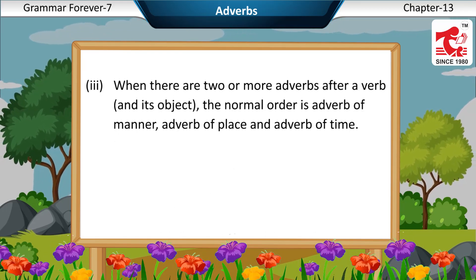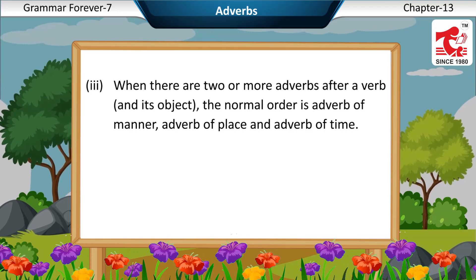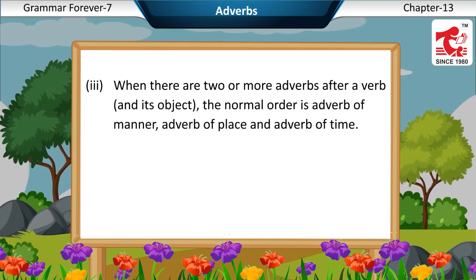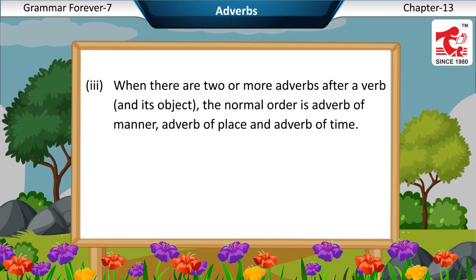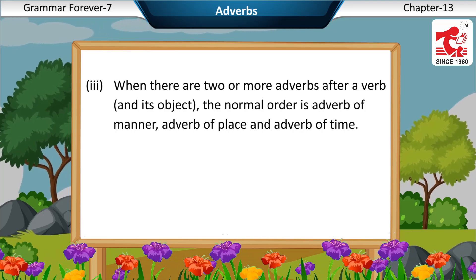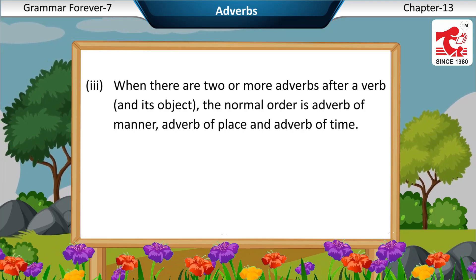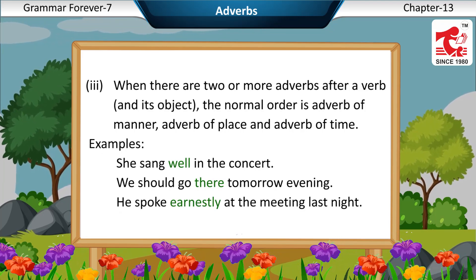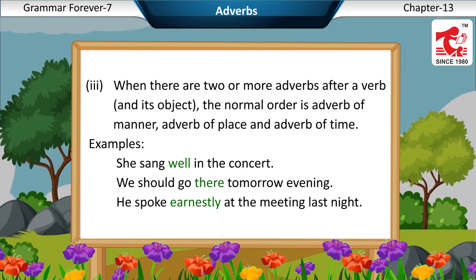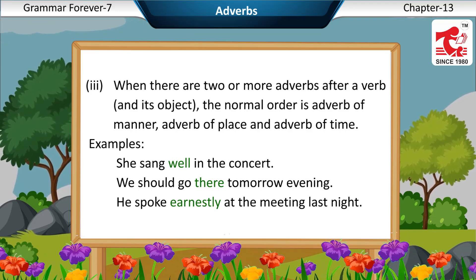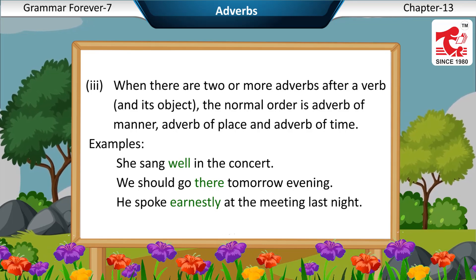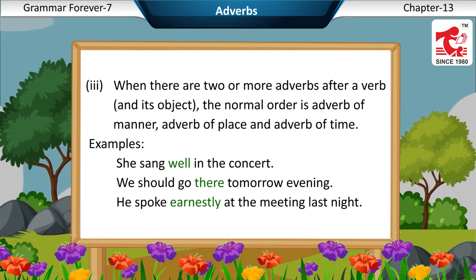Third, when there are two or more adverbs after a verb and its object, the normal order is: adverb of manner, adverb of place, and adverb of time. Examples: She sang well in the concert. We should go there tomorrow evening. He spoke earnestly at the meeting last night.